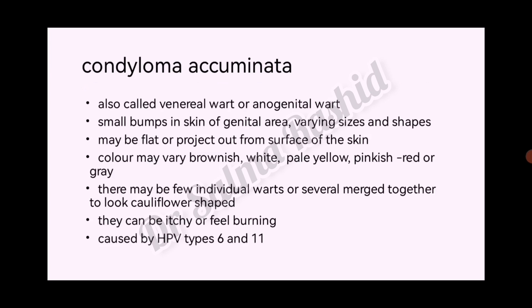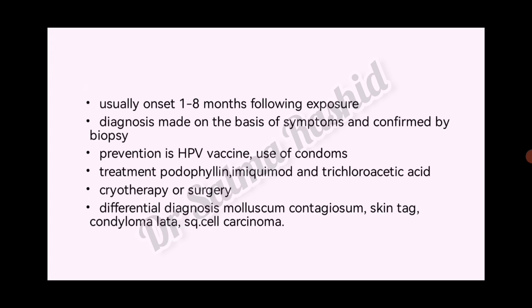Condyloma acuminatum is caused by human papillomavirus types 6 and 11. Usual onset is 1 to 8 months following exposure. Diagnosis is made on the basis of symptoms and confirmed by biopsy. Prevention includes the human papillomavirus vaccine and use of condoms.